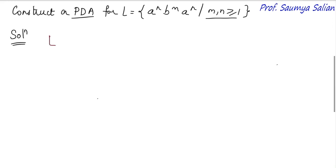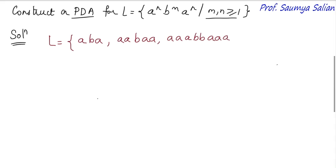Now let's define our language. When n and m are both equal to 1, we get A, B, A as our smallest valid string. Then if n equals 2 and m equals 1, we get A, A, B, A, A. Other strings are also valid. The only matter of concern is that the number of A's at the start must match the number of A's at the end, and at least 1 B must be present.